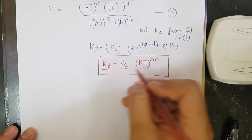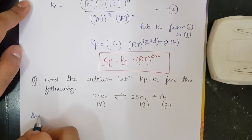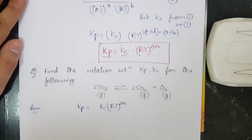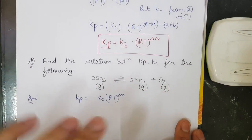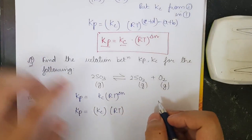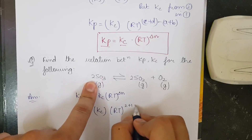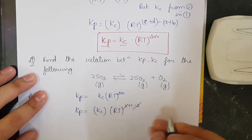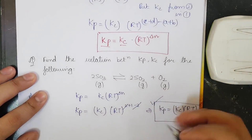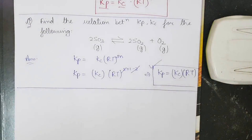Let us do a basic example of the type asked in JEE Mains. Using Kp = Kc·(RT)^Δn, with all substances in the gaseous phase, find Δn. Products give 2+1 = 3, reactants give 2, so Δn = 3−2 = 1. Therefore Kp = Kc·(RT)^1. Mathematics makes everything easy once you apply it systematically.